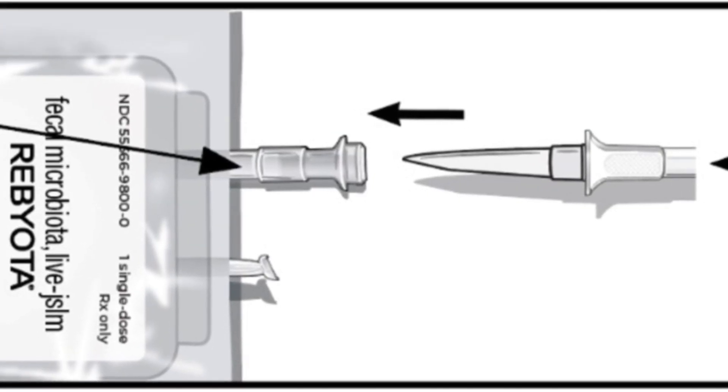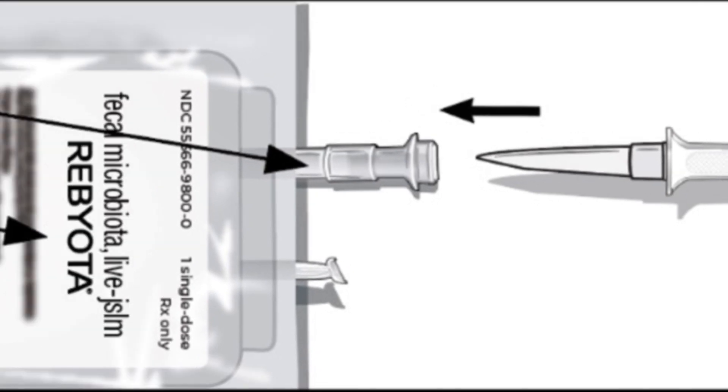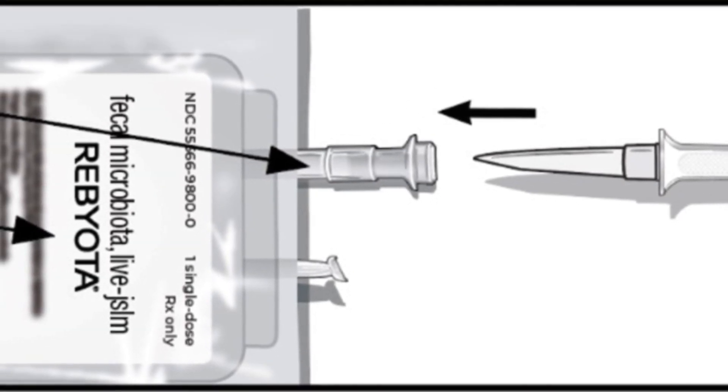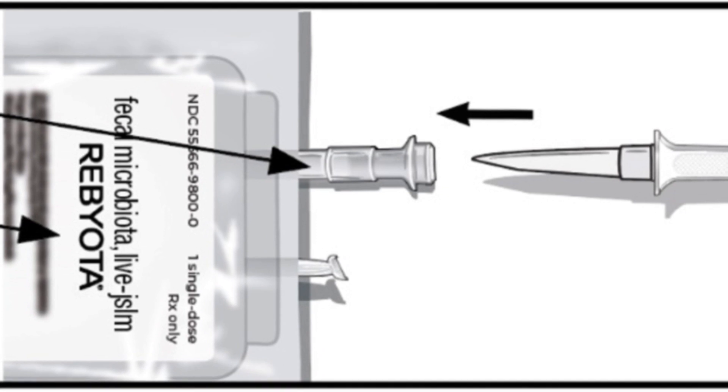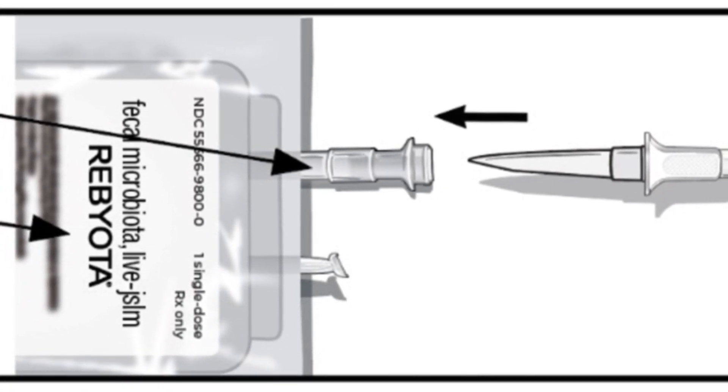The tubing will provide access to the Rebiota bag. Remove the tab from the spike port of the bag containing thawed Rebiota and remove the cap from the administration tube spike. Insert the administration tube spike through the spike port of the bag containing thawed Rebiota.